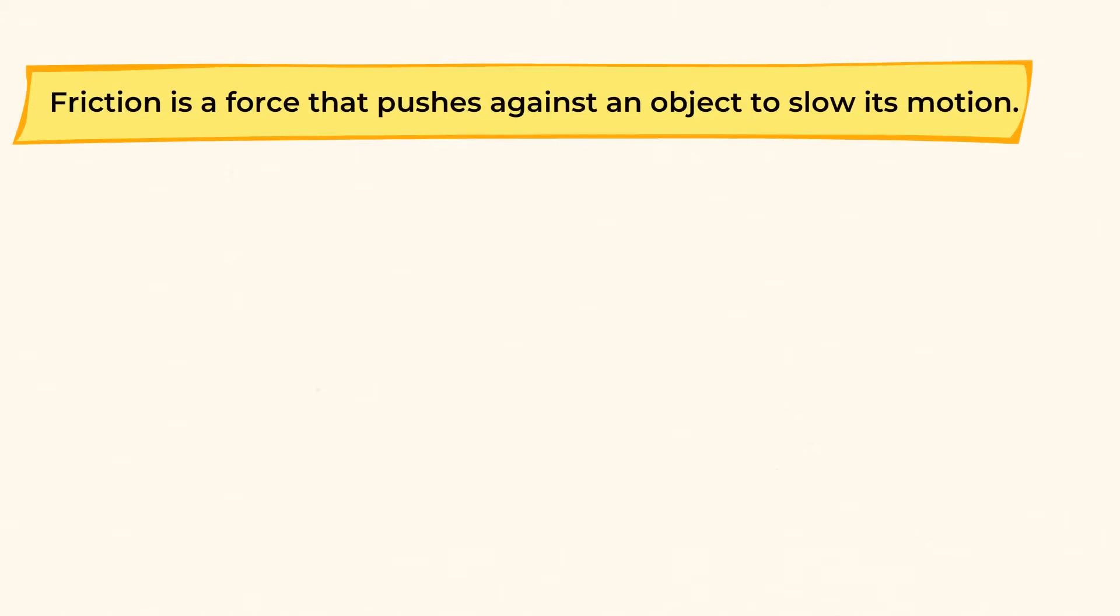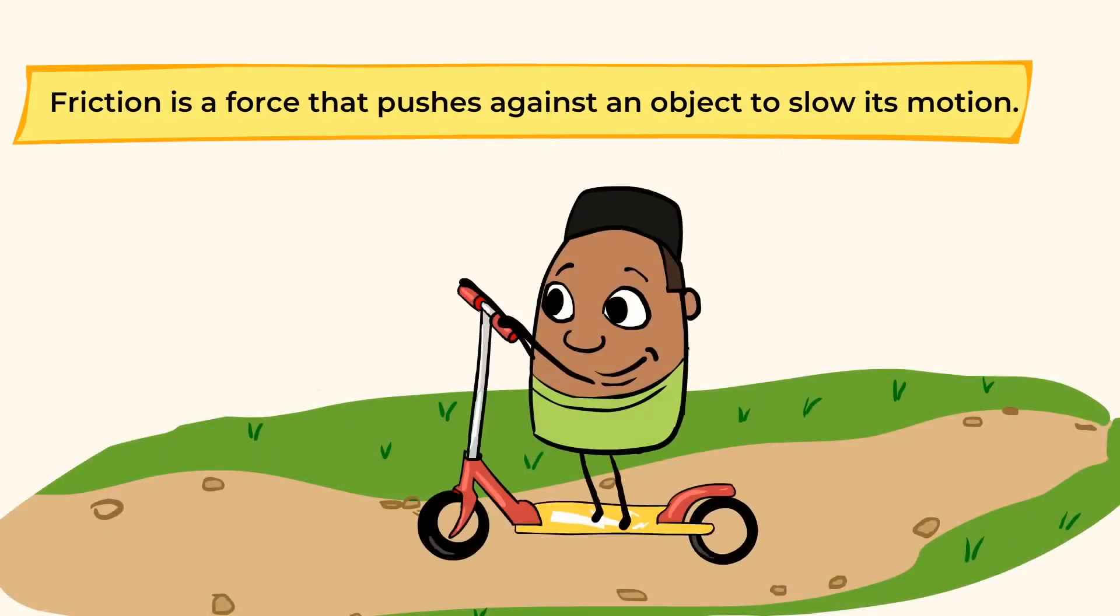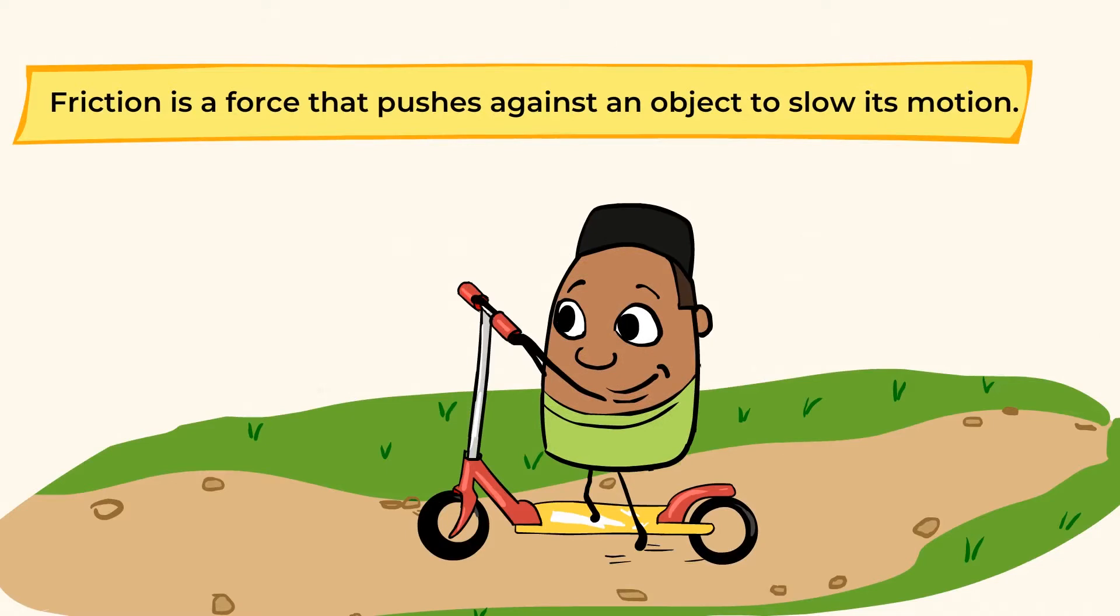Friction is a force that pushes against an object to slow its motion. When you're riding your scooter, for example, you drag your foot on the ground to slow it down or even stop the scooter. You may have used friction in your life without even realizing it.